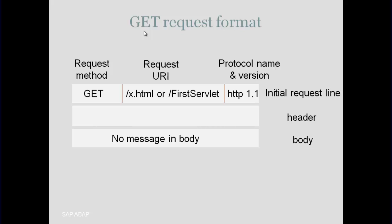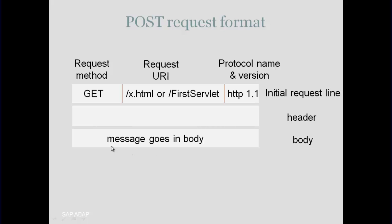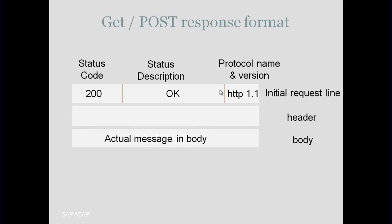The POST request format is the same as the GET request format, but the method field says POST instead of GET. The key difference is that in POST, the message is sent inside the body of the packet and not in the URL. So the main difference between GET and POST is: GET sends data inside the URL, while POST sends data inside the body of the packet.